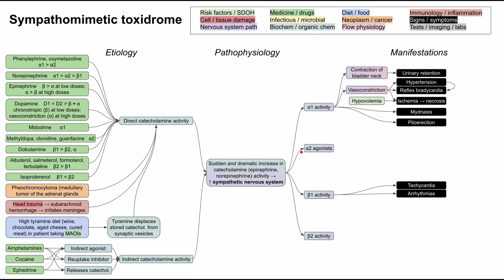Let's skip down to beta-1 activity — alpha-2 is unique and we'll save that for last. Beta-1 receptors, located mostly on the heart, cause tachycardia and arrhythmias. These conditions can predispose the patient to angina by increasing myocardial oxygen demand, and in severe cases can cause myocardial infarction. Patients with pre-existing coronary artery disease are particularly at risk, and this beta-1 activity is crucial to that pathophysiology.